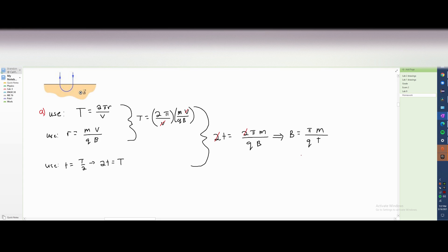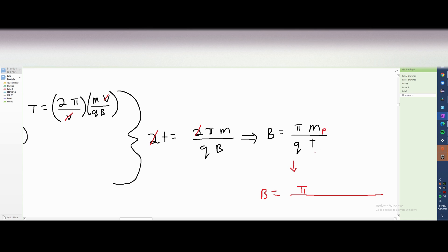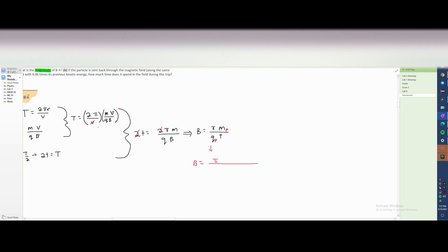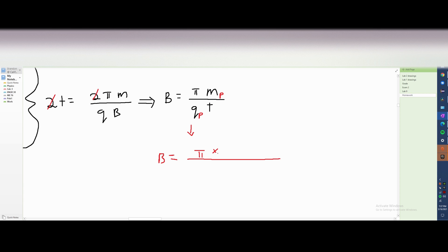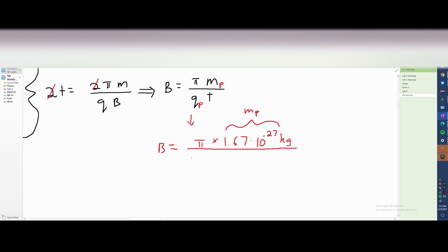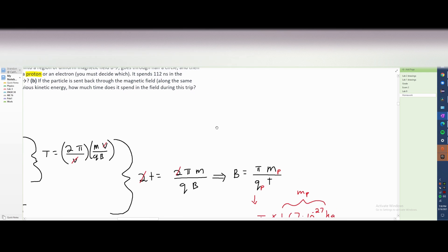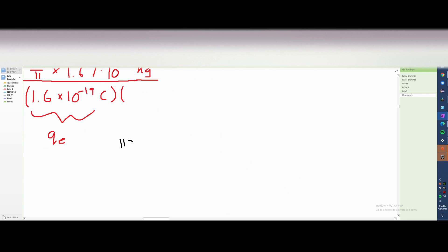Now we can just start plugging in our values. On the top, we have our π times the mass. And this is going to be mass of a proton because we decided it's a proton and we have the charge of a proton here. The mass of a proton is just 1.67 times 10 to negative 27 kilograms. The charge of an electron and the charge of a proton are the same. So this is going to be 1.6 times 10 to the negative 19 coulombs. And this is being multiplied by T. And our T is 112 nanoseconds. We were given 112 nanoseconds. We need this to be in seconds though.